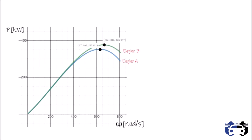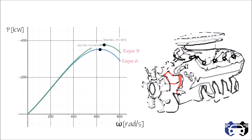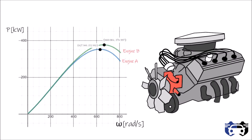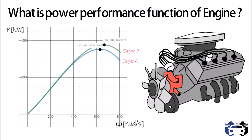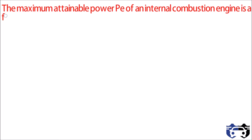Welcome to the channel. In this video you will learn what is the power performance function of an engine. The maximum attainable power pe of an internal combustion engine is a function of engine angular velocity omega e.